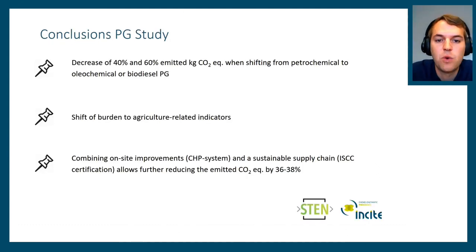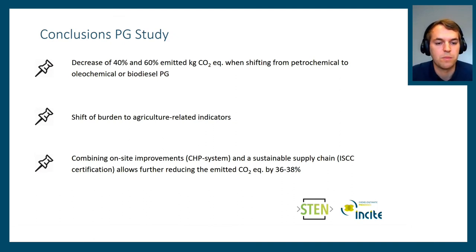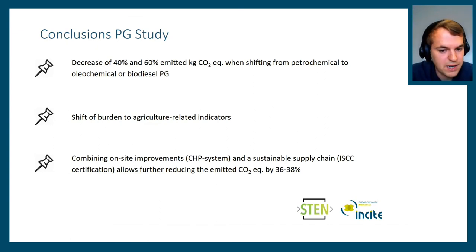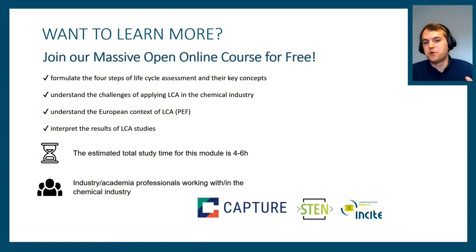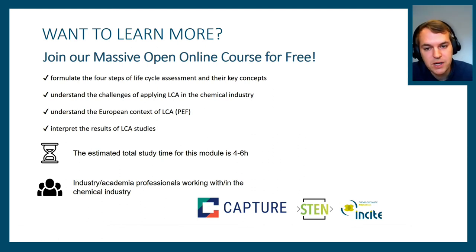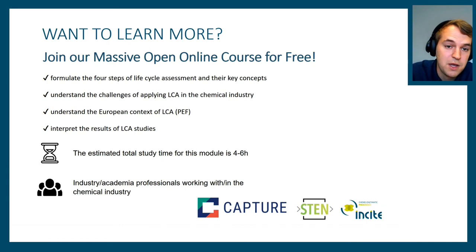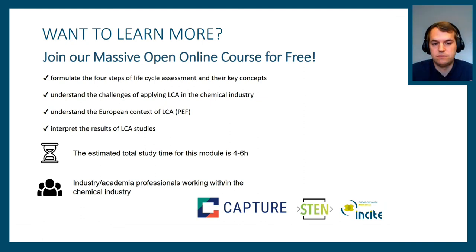Conclusions for this study: switching from the petrochemical to a renewable-based route — oleochemical or biodiesel PG — can decrease emitted CO2, but we should be aware that the burden can shift to agricultural-related indicators. Combining on-site improvements and sustainable supply chain practices allows further reducing our impact. We are also preparing a massive open online course on life cycle assessment that will dive much deeper into LCA in the chemical industry — it will be launched in the upcoming months and sent to all registered webinar participants, free of charge.